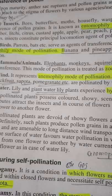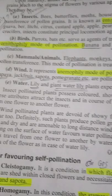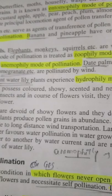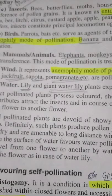For Ornithophily — parrots, bears, etc. help in ornithophily, and Banana and Pineapple have this mode of pollination. Also remember Anemophily, which is wind pollination. Papaya, Jackfruit, Sapota, Pomegranate, Date Palm, Coconut, and Cashew Nut all show anemophily.